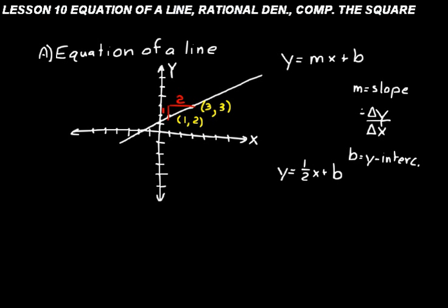We could observe that the y-intercept is about 1 and a half, but there's a more accurate mathematical way. Substitute one of the two points on the line into y equals one-half x plus b to solve for b. Substituting 3 comma 3: 3 equals one-half times 3, or three-halves, plus b. Subtracting three-halves from both sides, b equals three-halves or 1 and a half.